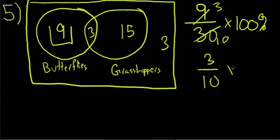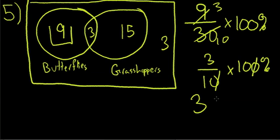These zeros cancel out, so it's just 3 times 10, which is 30 percent. Therefore, the number of students who studied butterflies only equals 30 percent of the total science class. That is choice C.